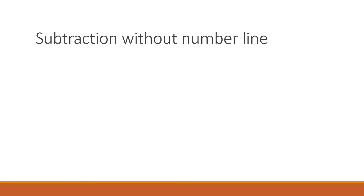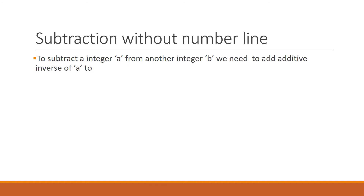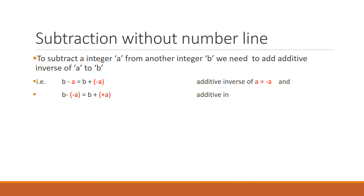Now let's see subtraction without number line. To subtract an integer a from another integer b, we need to add the additive inverse of a to b. That means b minus a is equal to b plus minus a. We know that the additive inverse of a is minus a. And b minus minus a is equal to b plus a, where the additive inverse of minus a is a.